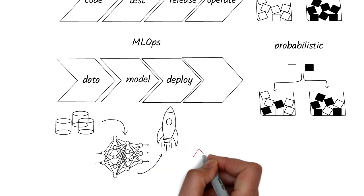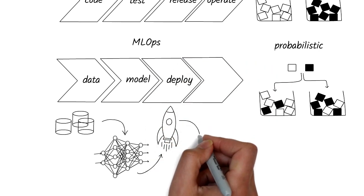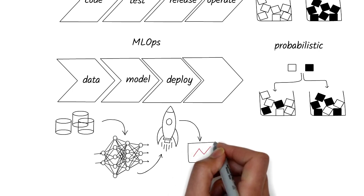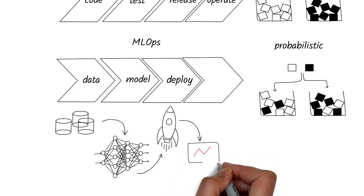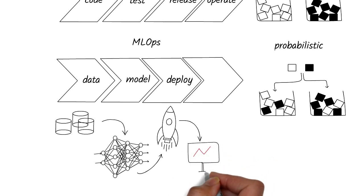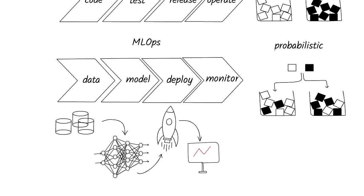Models may change over time because the underlying data may change — and that's called model drift. So we need to monitor these models. Ultimately, these models deliver value to the customer. We should minimize the risk and reduce unexpected changes to the customer's experience. Hence, model monitoring is a 24x7 operation.